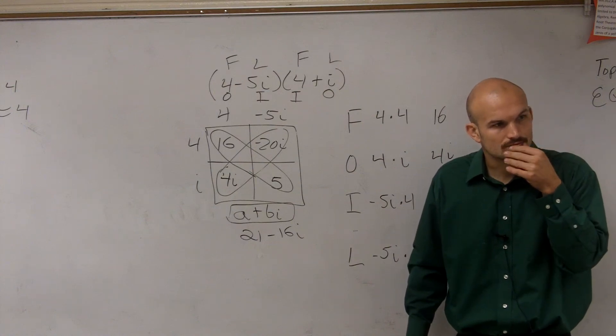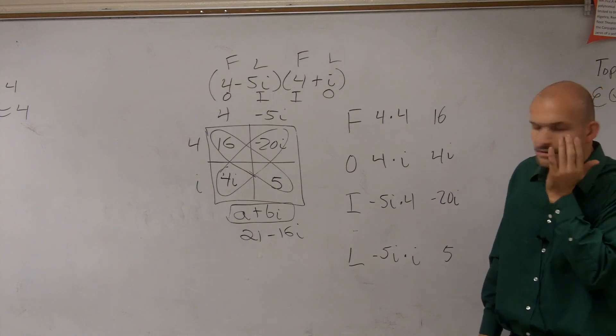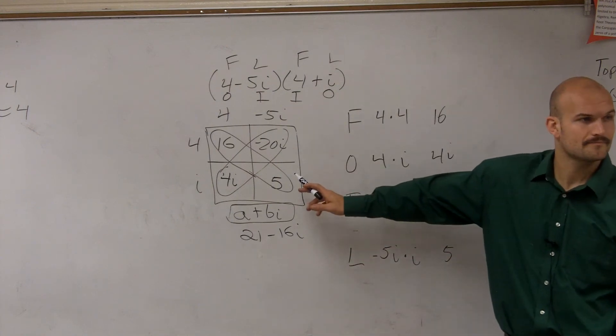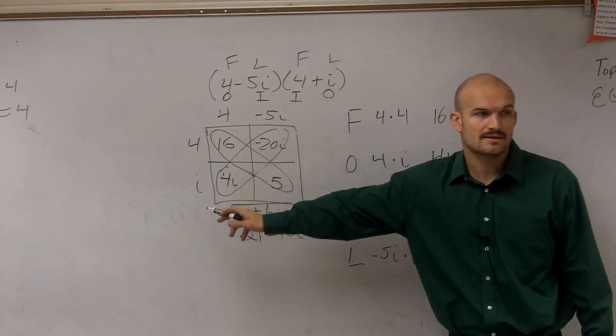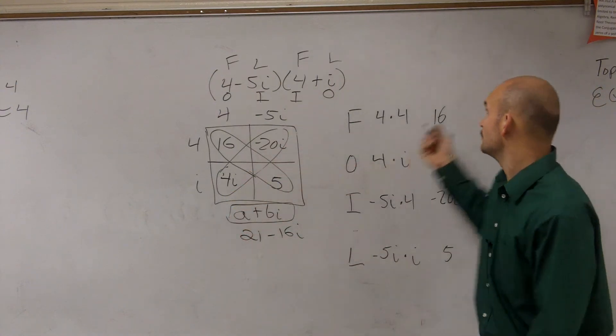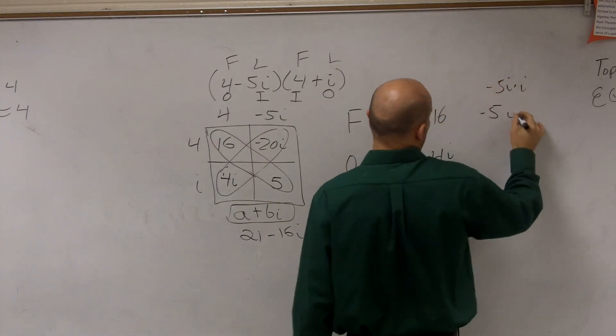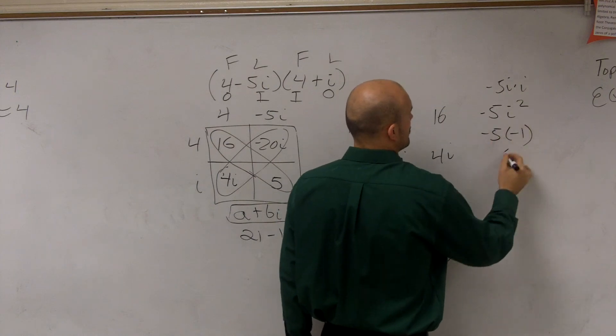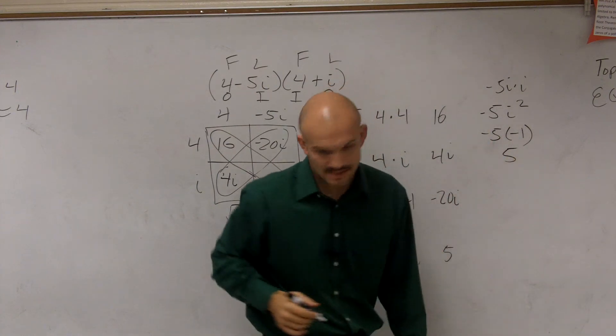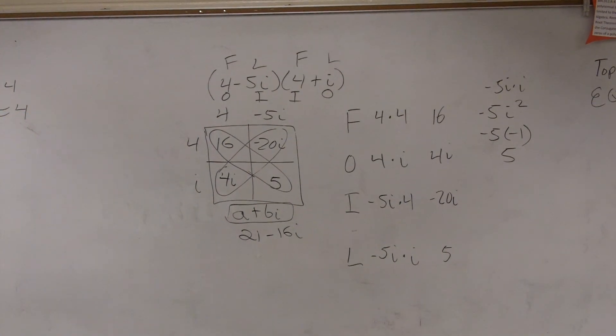Negative 5i times i is negative 5 times i squared. Remember, i squared is negative 1. Make sense? OK. Do you guys still want me to go through?